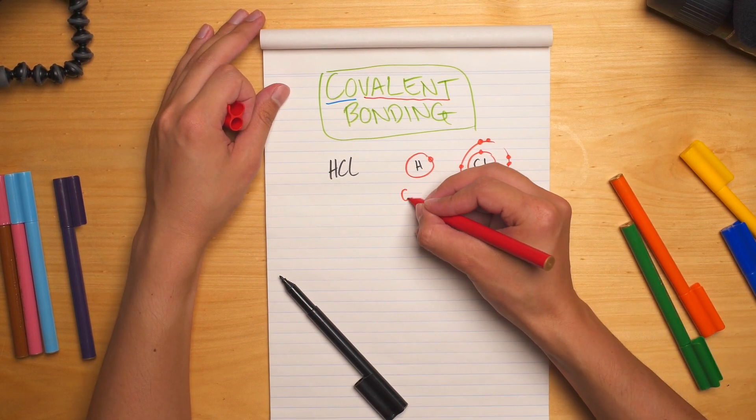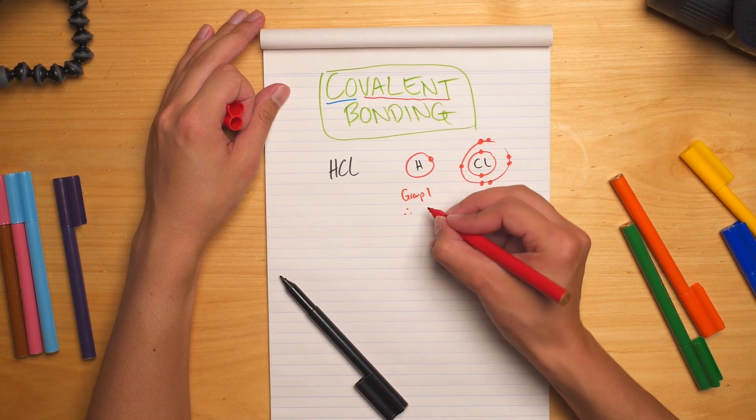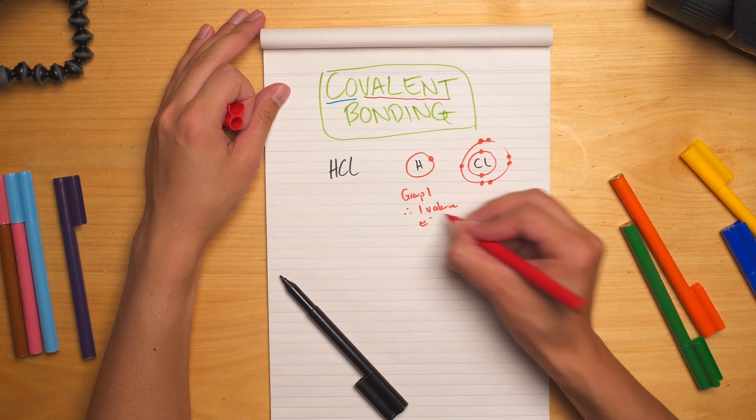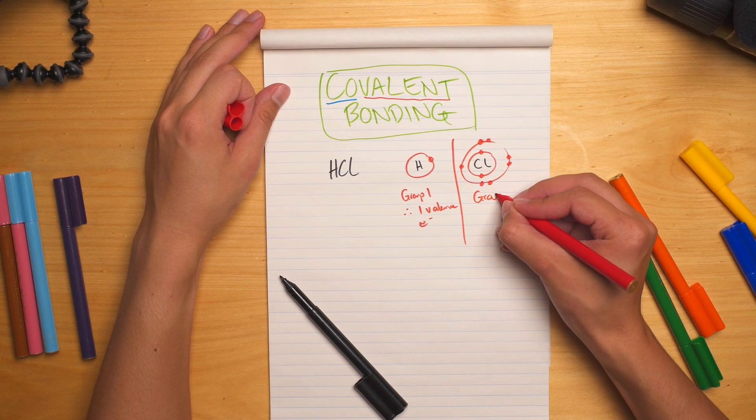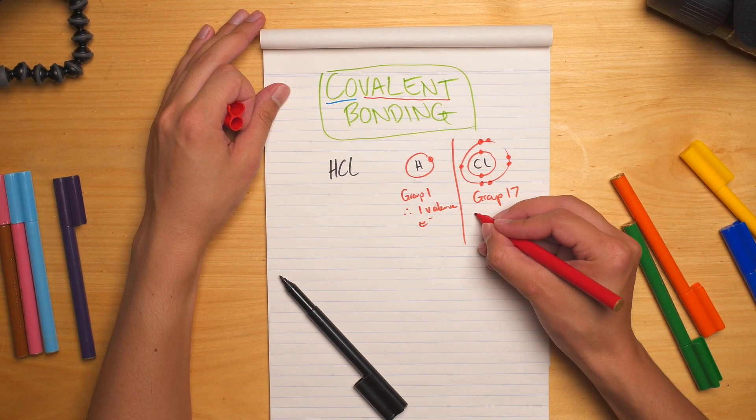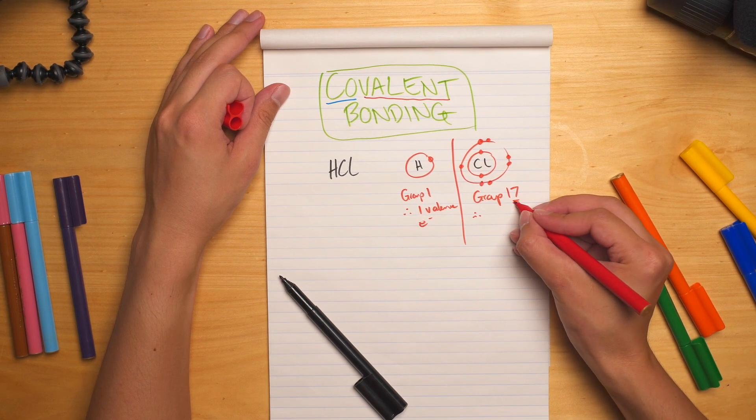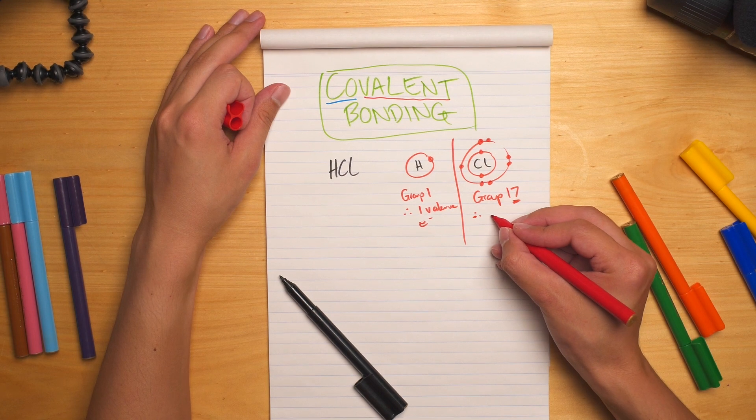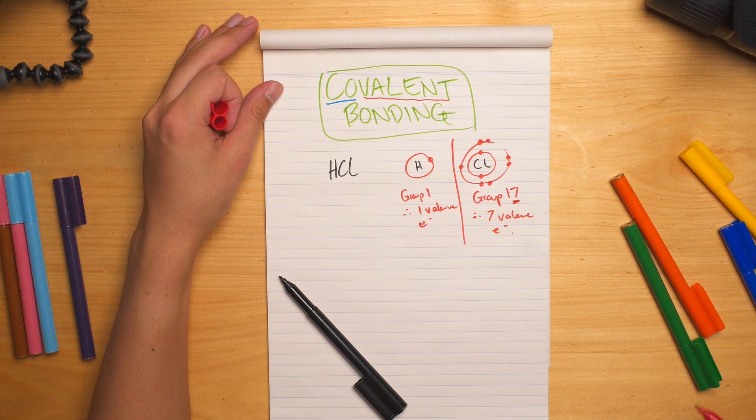So this is group 1, therefore 1 valence electron. Whereas Chlorine is group 17, and we're just taking this digit here, the 7, we ignore that 10, as per my earlier videos have mentioned. So that means it has got 7 valence electrons in its outside shell.